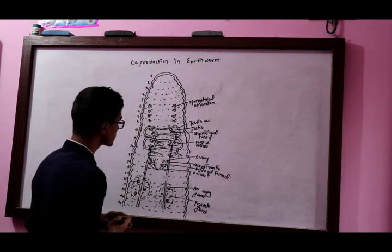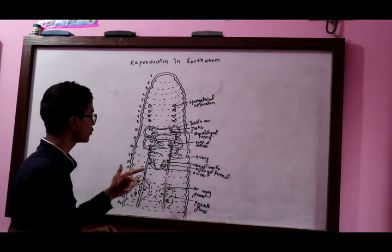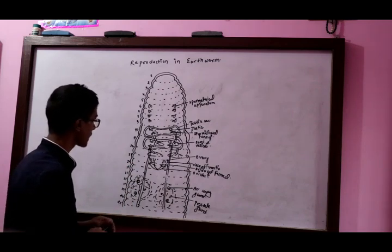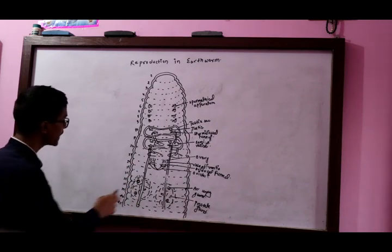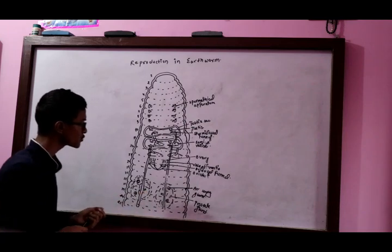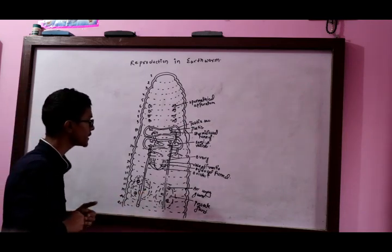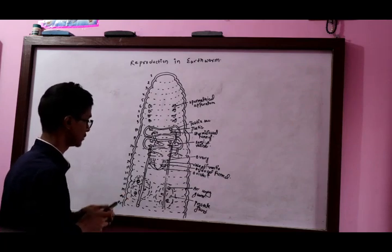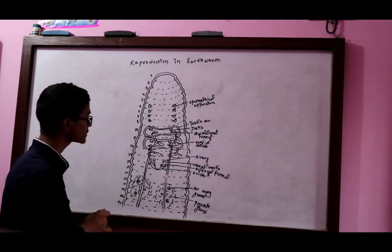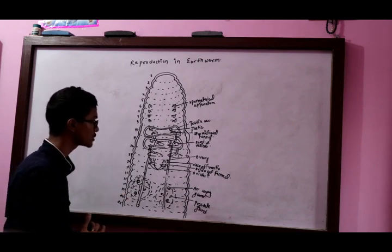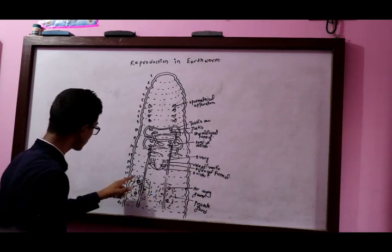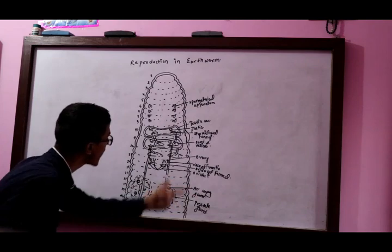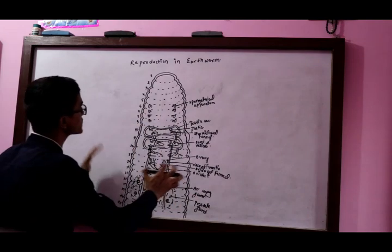This is a small difference between the prostate gland and the prostate gland. This is an accessory gland. This is a prostate gland. The prostate gland is in segments 16-21, or 17-22 segments. This is a sperm duct. This is a gland in the 17-19 segment. This is a gland. This is a vas deferens.